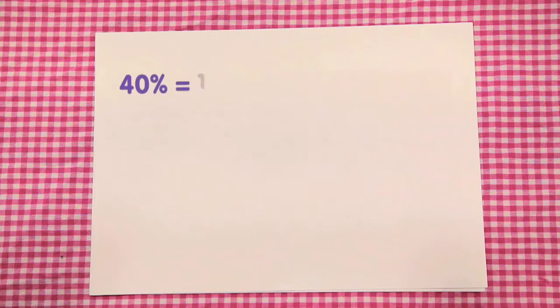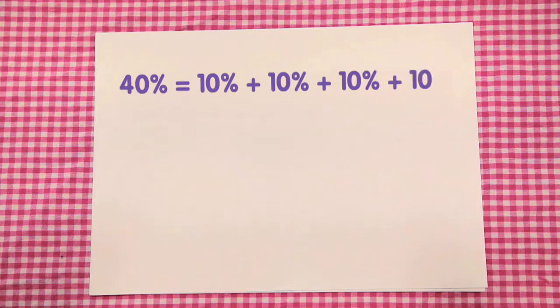We can break the percentage up into chunks if need be. 40% is the same as 10% plus 10% plus 10% plus another 10%. So first, let's work out 10% of £255.